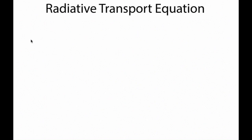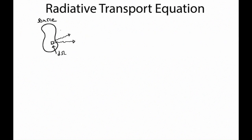Today we're going to talk about the radiative transport equation. Previously we talked about specific intensity, and in that context we talked about a source on the sky with an emitting patch that covers an angular area d-omega on the sky. The radiation from that patch enters into a telescope with area dA, which is part of our telescope through which we look — and here we are, an observer.